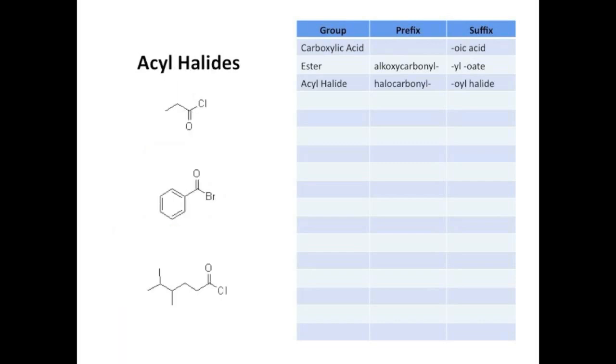Acyl halides come next. They are the most reactive of the carboxylic acid derivatives. You see them used in Friedel-Crafts acylation, for example. They're given the suffix -oyl halide, which makes the first example propanoyl chloride. Their prefix is halocarbonyl, but again, don't worry about it too much. The second example is benzoyl bromide, and the last one is 4,5-dimethylhexanoyl chloride. So that's it. Pretty simple.